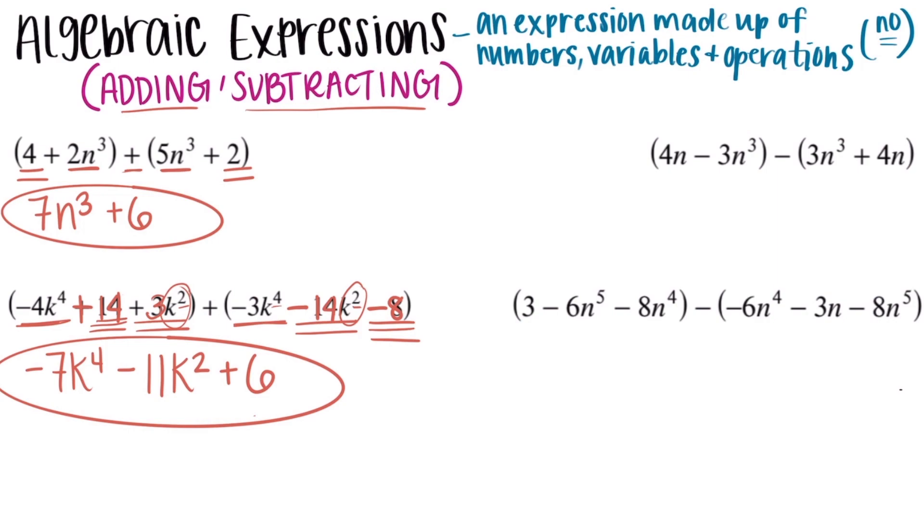Moving on to subtraction, it's a little more complicated, but not really. We're going to just turn these into adding problems so we can do them exactly like we just did those last ones. And we can do that by adding the opposite. So if you turn that minus into a plus, you have to turn the signs of all the terms following it. So if I turn that into a plus, I have two things following it. I have 3n to the third, and that's a positive 3n to the third, that's got to become negative. And I have a positive 4n, that also has to become negative. If it was negative, it would become positive.